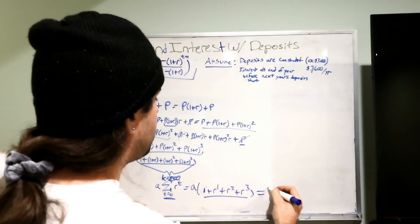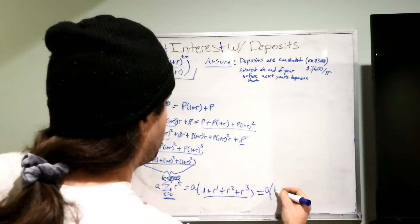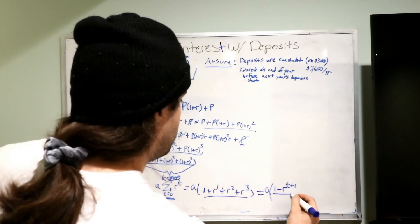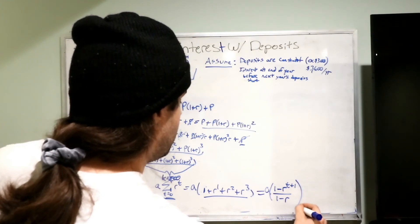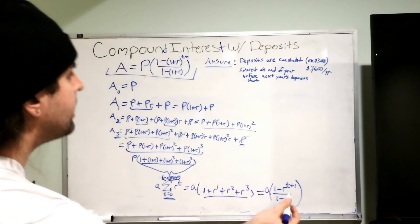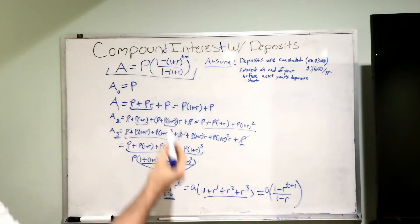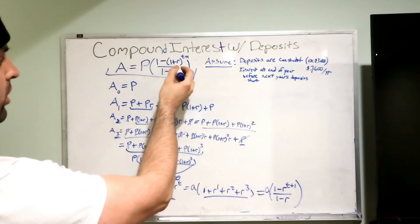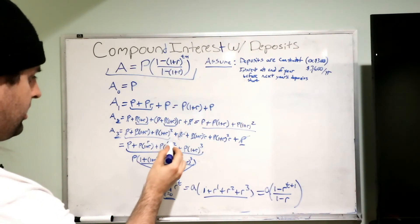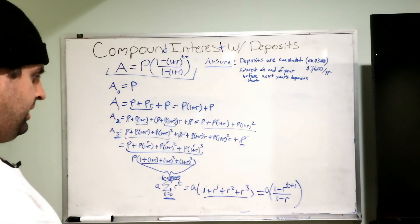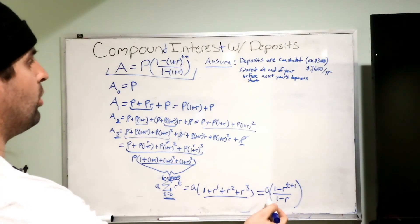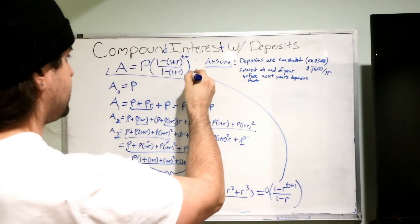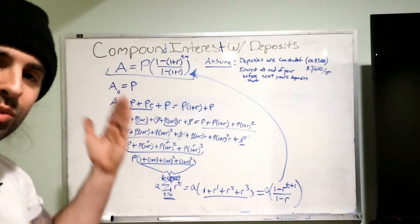This whole thing right here equals A times 1 minus R. Since we use T. T plus 1 over 1 minus R. That. And if you look at that, that is this. Where A is P, 1 minus, the R term is 1 plus R. See, this is R. This is R. I know multiple R's are confusing. But I hope you see that. 1 minus R. So it's 1 minus 1 plus R. This is this. That's where that comes from.